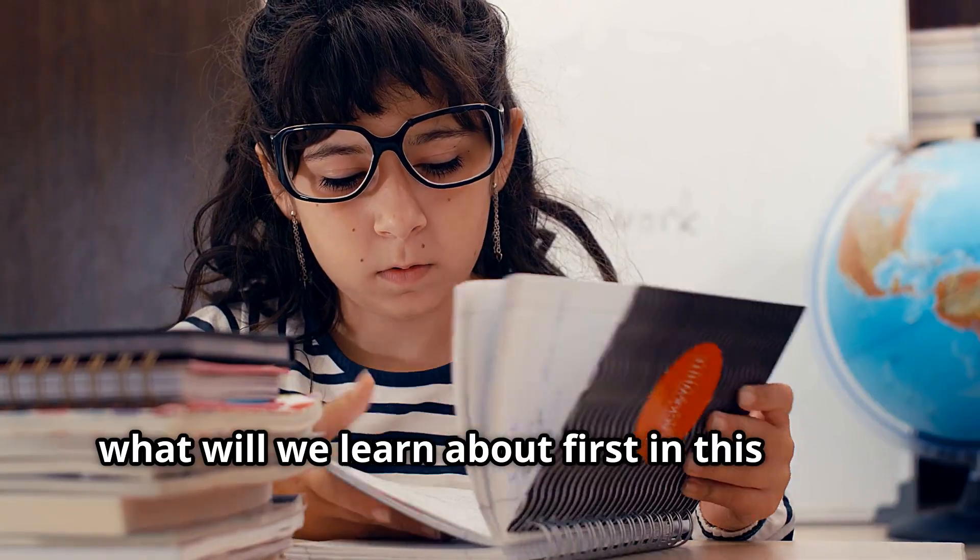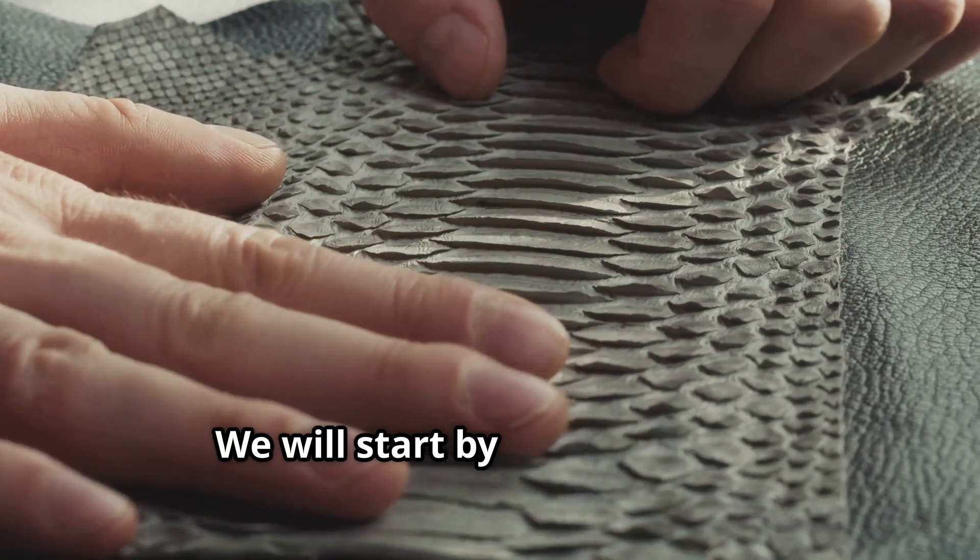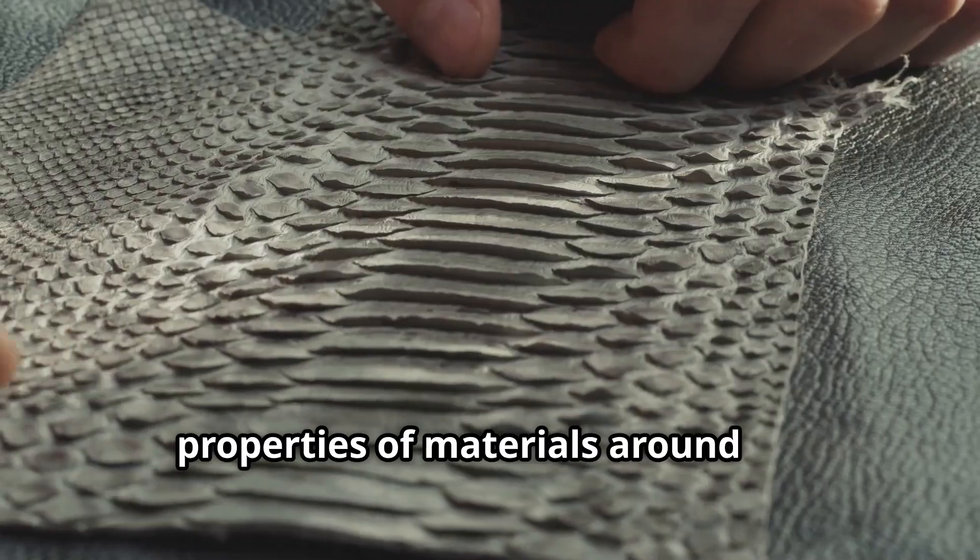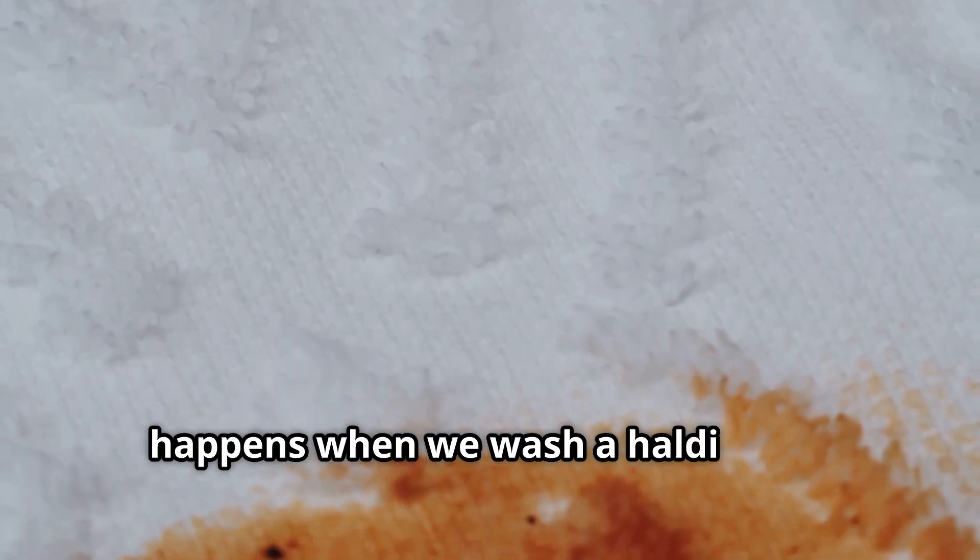So what will we learn about first in this book? We will start by looking at the properties of materials around us, like why some fruits are sour, or what happens when we wash a Haldi stain.